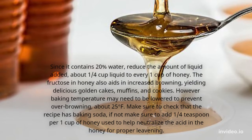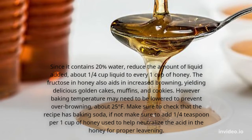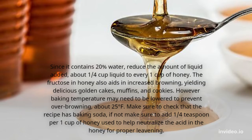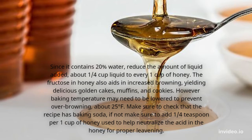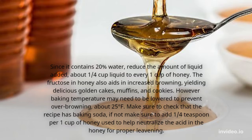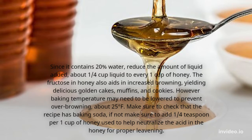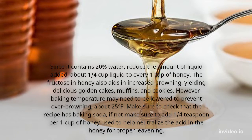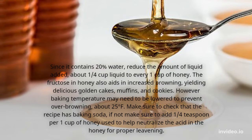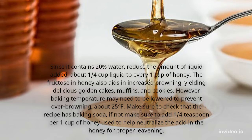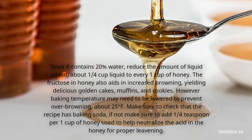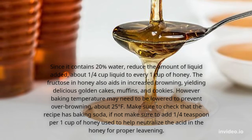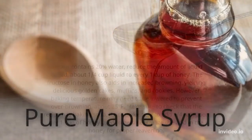Since honey contains 20% water, reduce the amount of liquid added — about one quarter cup liquid for every one cup of honey. The fructose in honey also aids in increased browning, yielding delicious golden cakes, muffins, and cookies. However, baking temperature may need to be lowered by about 25 degrees Fahrenheit to prevent over-browning. Make sure to check that the recipe has baking soda; if not, add one quarter teaspoon per one cup of honey used to help neutralize the acid in the honey for proper leavening.